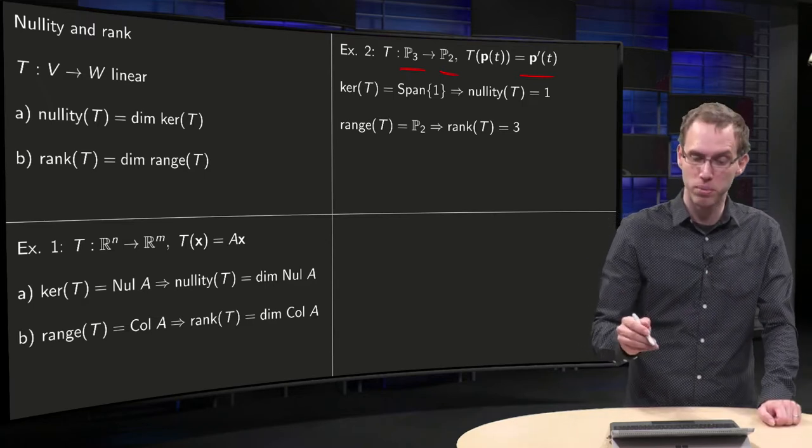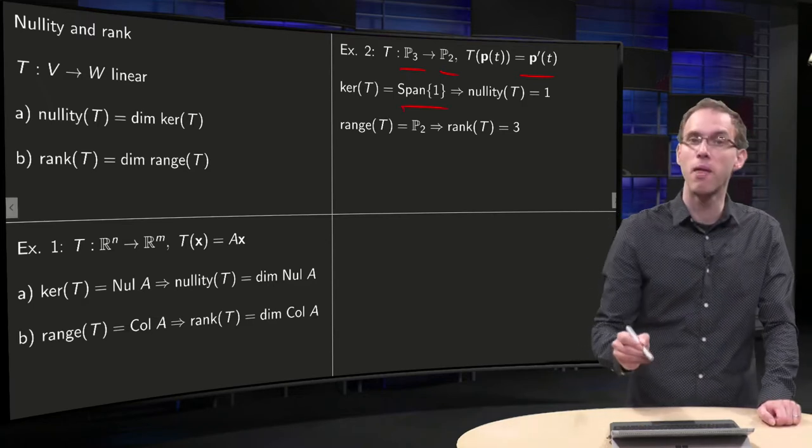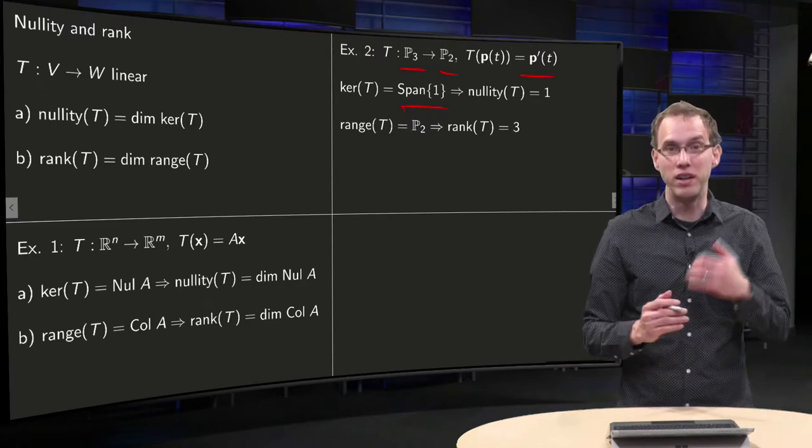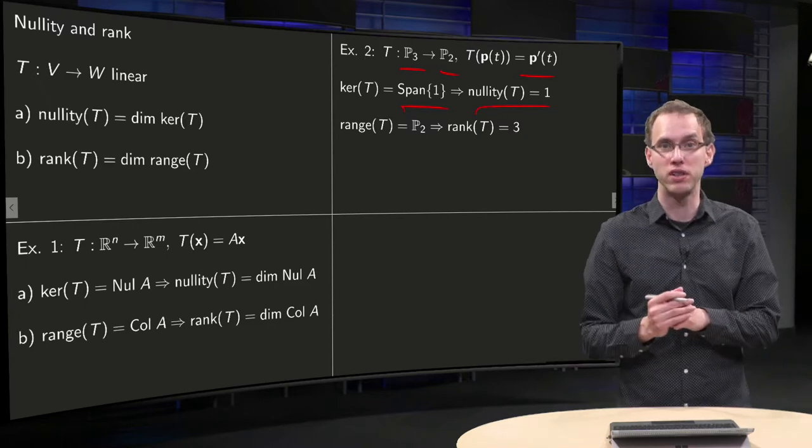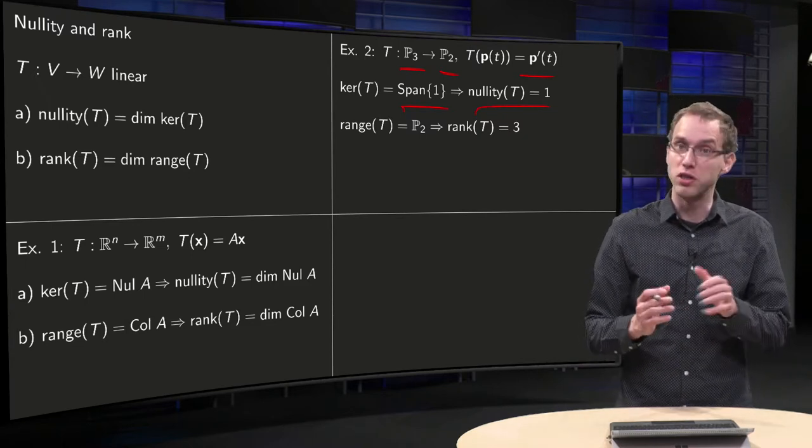so the kernel is the span of one. The dimension of this subspace is just one, one vector in the basis, so the nullity of T equals one.